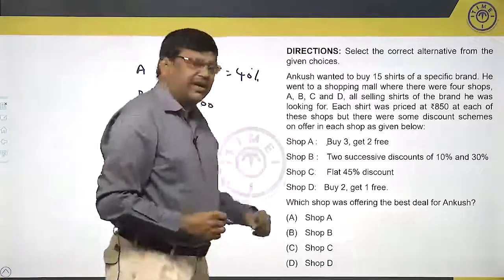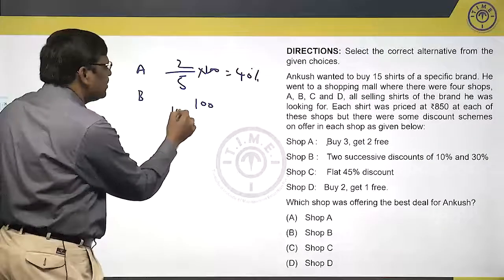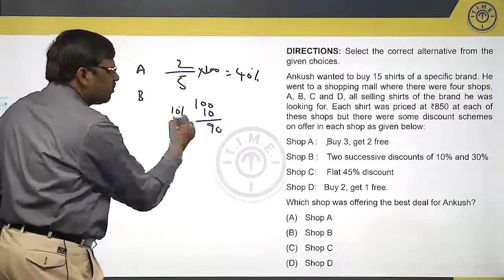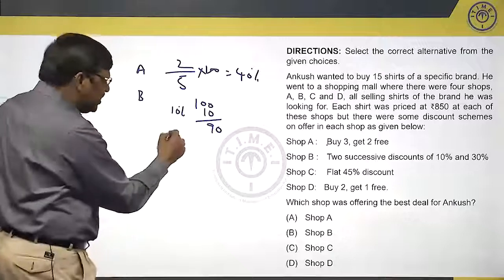Look at Shop B. Two successive discounts of 10% and 30%. Is two successive discounts of 10 and 30 equal to 40? No.